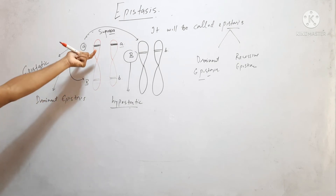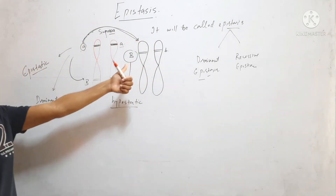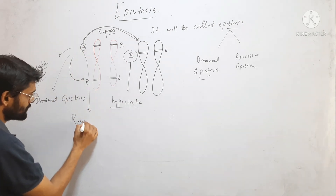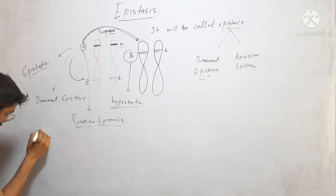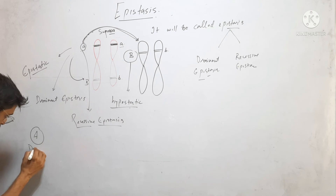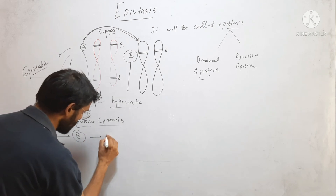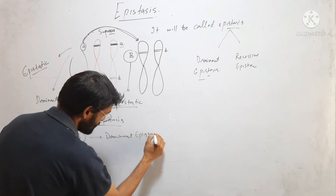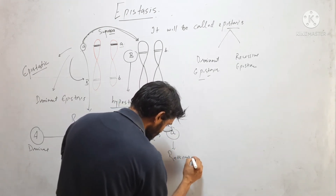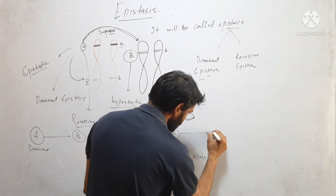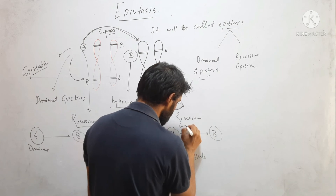When it is present in recessive form — small a, small a — and this recessive allele expresses another gene that is B, then it will be called recessive epistasis. When the dominant allele expresses the B gene, this type of epistasis will be called dominant epistasis. When the recessive allele expresses this gene, it will be called recessive epistasis.